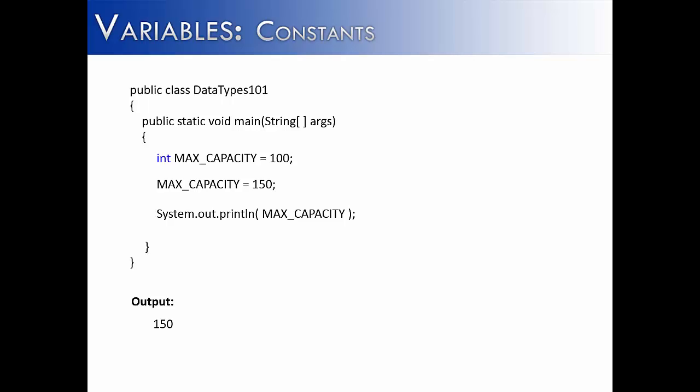So let's see how to make the variable constant. It's a simple addition in front of the data type. And we would add the word final in front of the integer data type. And now if I tried to change it to 150, it would give me an error because MAX_CAPACITY is now set for the program and unable to change.